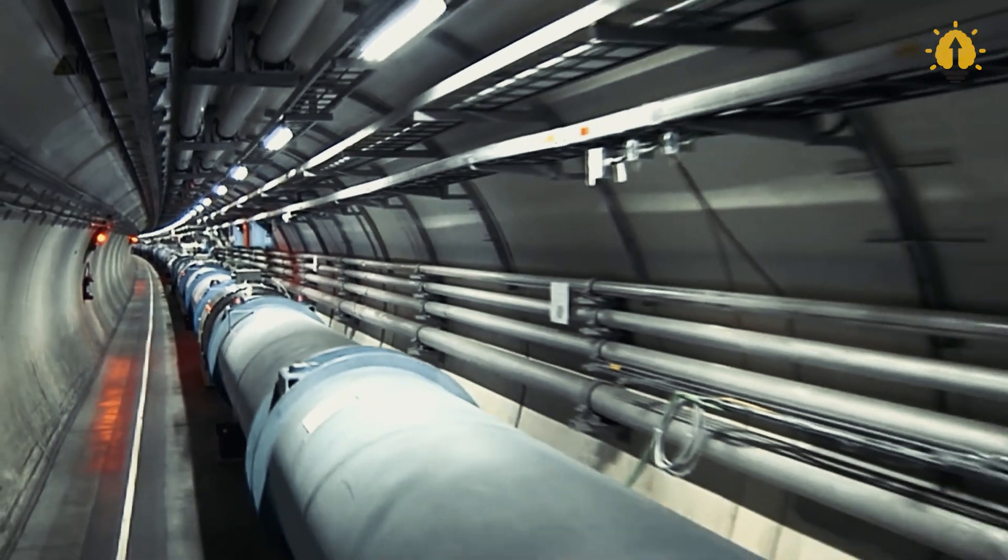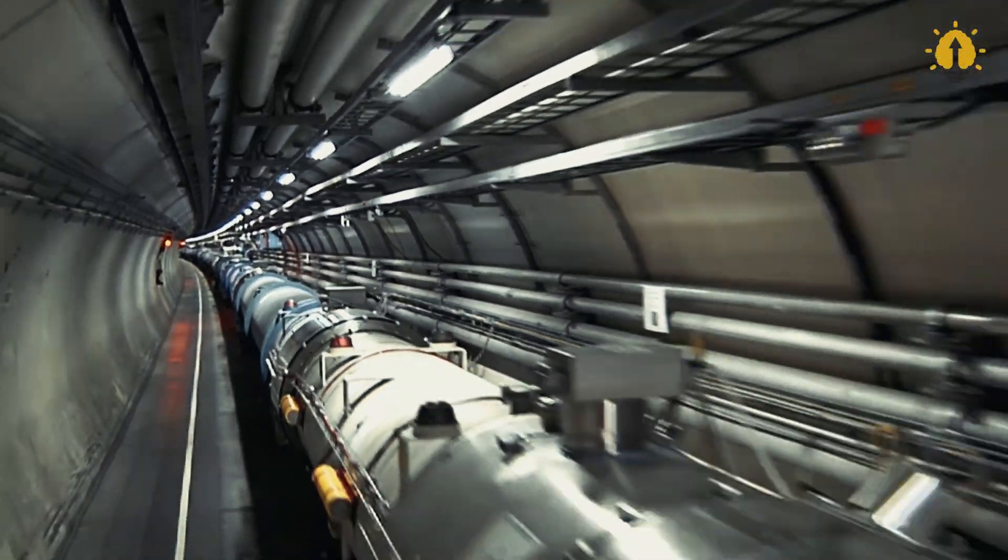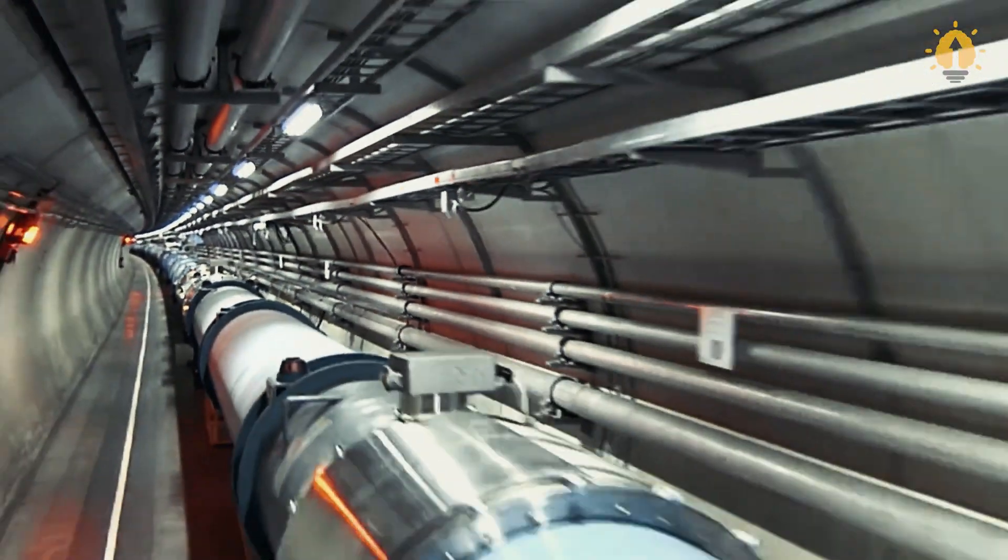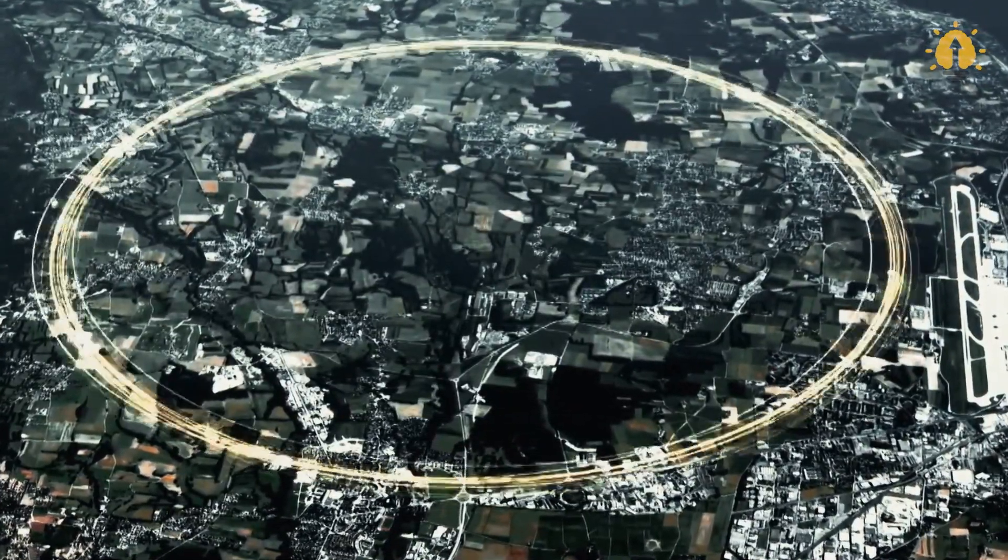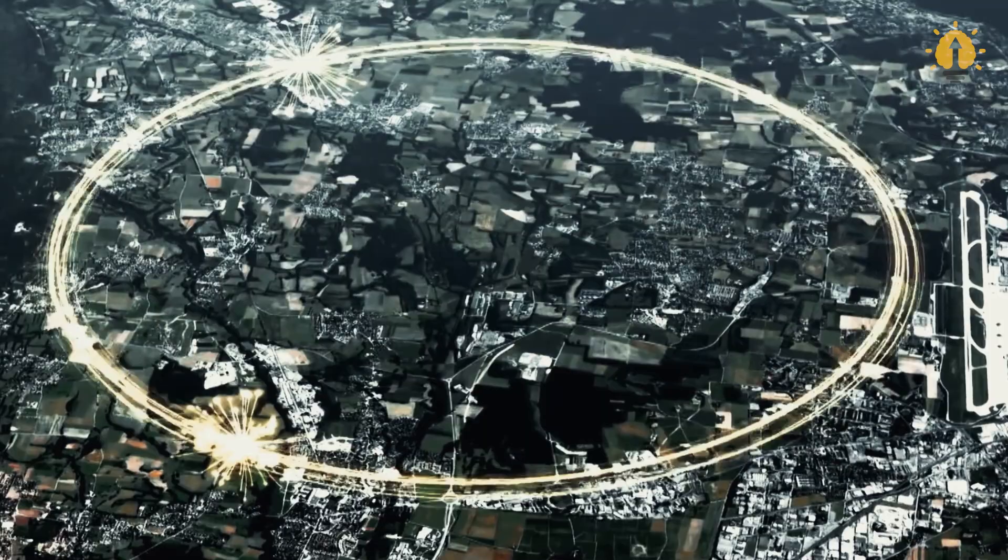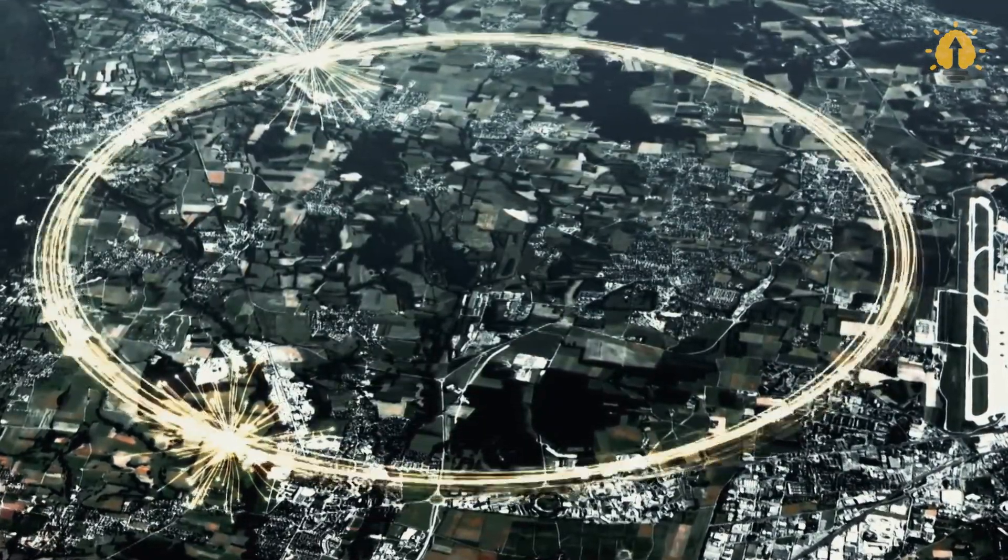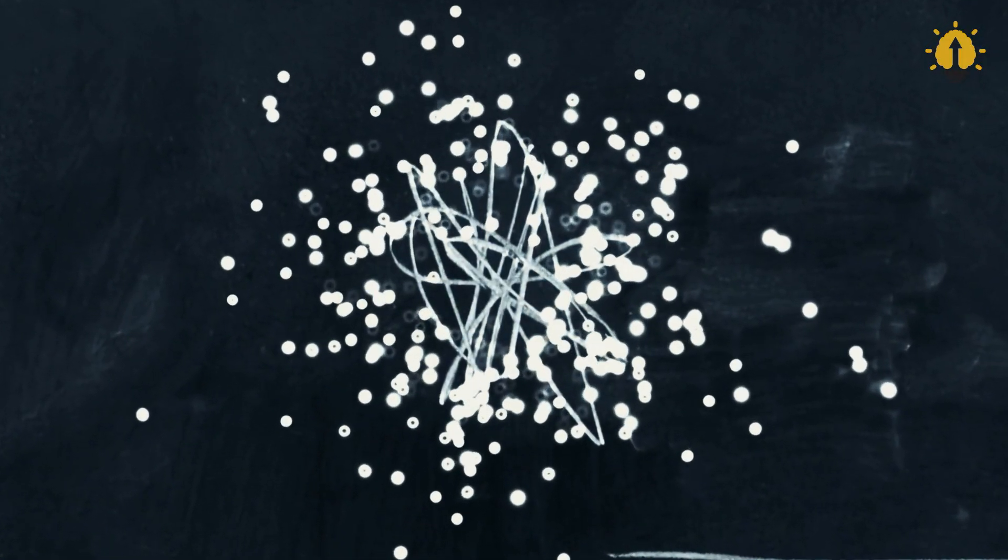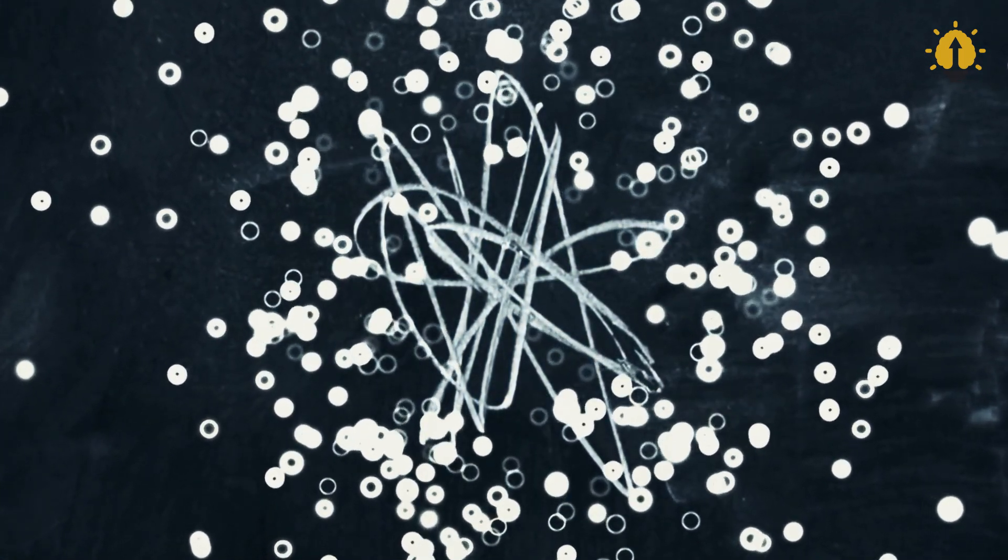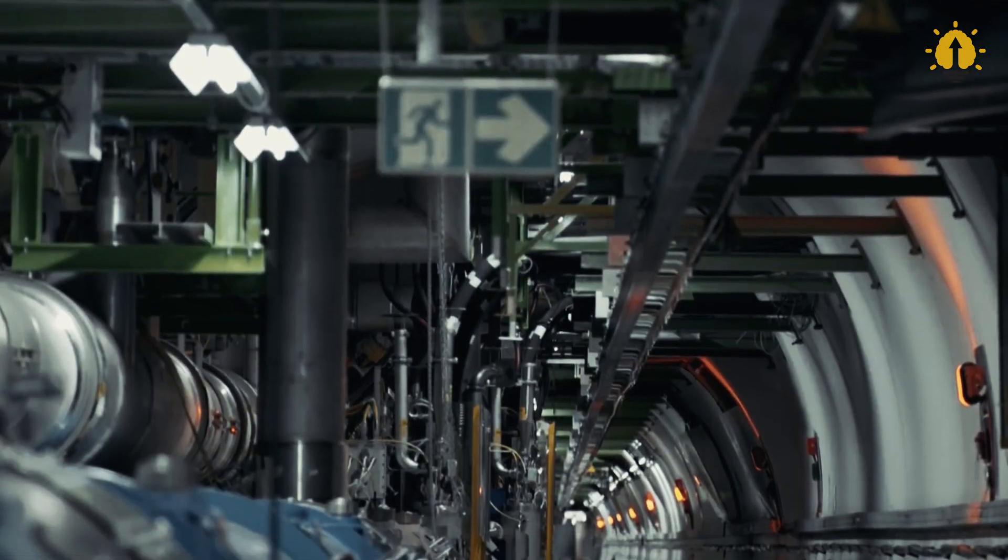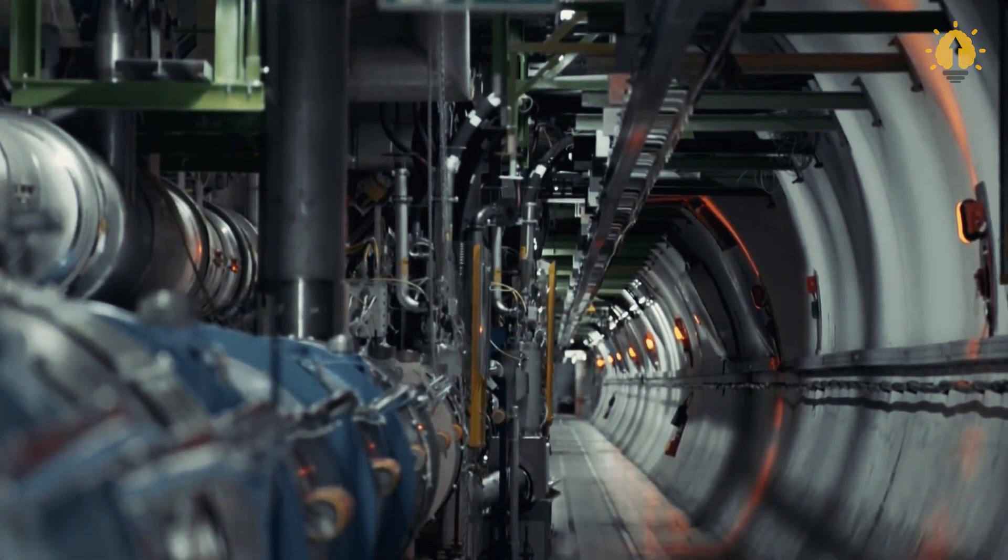Well, think again. Scientists have pushed the limits by using a powerful machine called the Large Hadron Collider. By colliding lead ions together at nearly the speed of light, they've created conditions reaching a mind-boggling 5500 trillion degrees Celsius. That's approximately 366,666 times hotter than the Sun's core temperature.